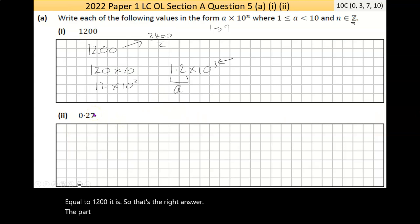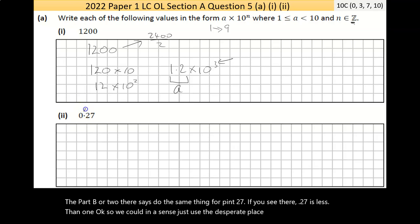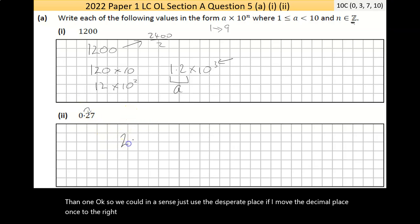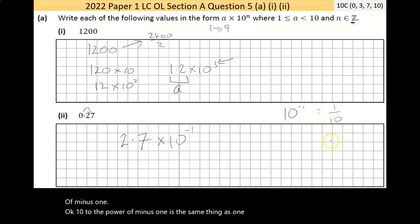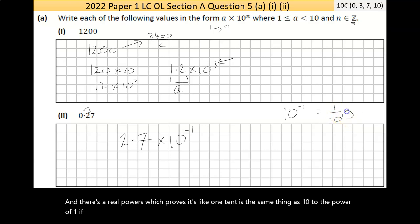Now part B says do the same thing for 0.27. Now if you see there, 0.27 is less than 1. So if I move the decimal place once to the right, that gives me 2.7. Now 2.7 and 0.27 are not the same thing. But we can multiply that by 10^-1. Now 10^-1 is the same thing as 1 tenth.